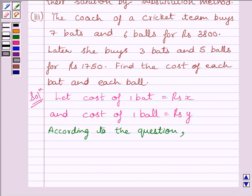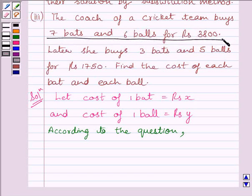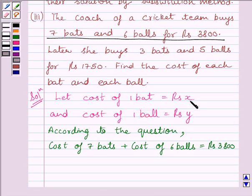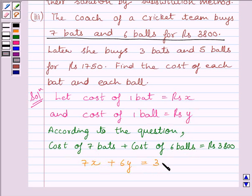Now according to the question, the coach buys 7 bats and 6 balls for Rs. 3800. The cost of 7 bats would be 7X and the cost of 6 balls would be 6Y. So we get the equation: 7X plus 6Y is equal to Rs. 3800.